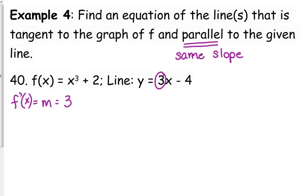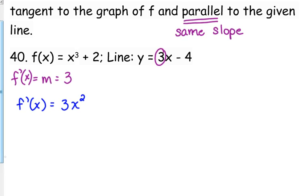So that is the value of the derivative at some x value. We need to find the x value. Let's take the derivative. F prime of x is equal to 3x squared. We know that that is equal to 3 somewhere. We need to find that somewhere.